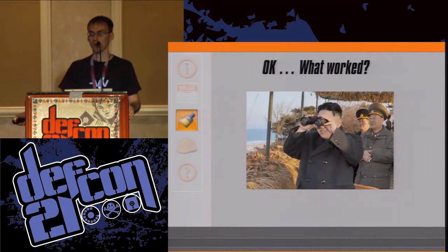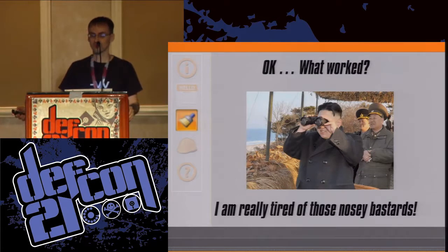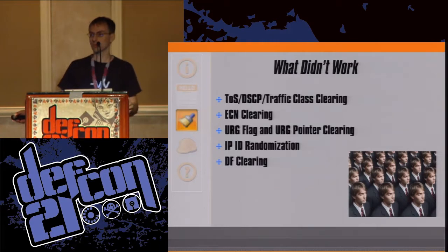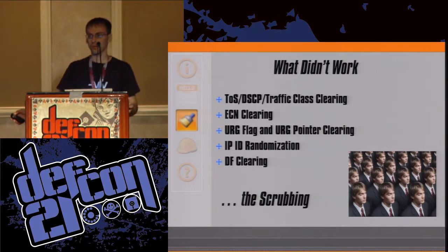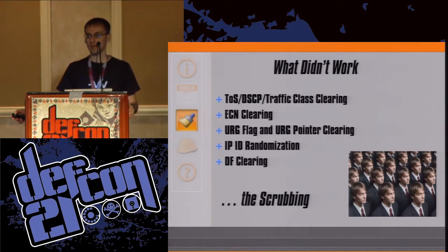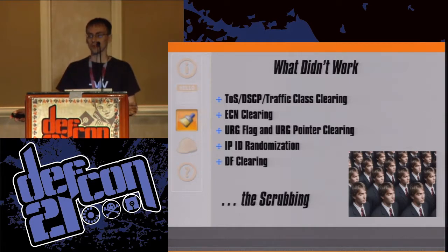Now let's talk about what worked and what didn't work so well by itself. The type-of-service clearing, ECN clearing, URG flag and pointer clearing, IP ID randomization, do-not-fragment flag clearing — the scrubbing — didn't work great alone. What really helped, and made the rest of the algorithm possible, was the IP ID randomization. The others I might ultimately remove because there's a possibility — even remote — that the stack could be disrupted, especially on an internal network with type of service.